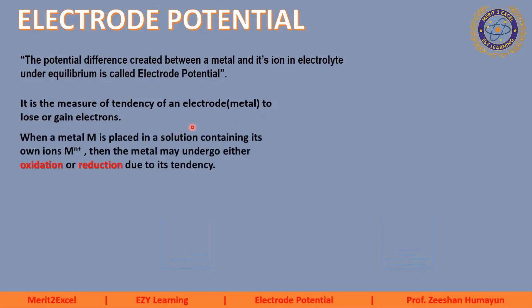Koi bhi metal jo hai woh apni tendency ke mutabiq ya toh oxidation kar sakta hai ya reduction kar sakta hai. When a metal M is placed in a solution containing its own ions Mn+, then the metal may undergo either oxidation or reduction due to its tendency. Yeh metal ki apni tendency aur ability hai. Jab oxidation karega us waqt ka jo potential hoga woh kuch aur hoga, aur jab reduction karega tab us ke potential ko kuch aur kaha jata hai.